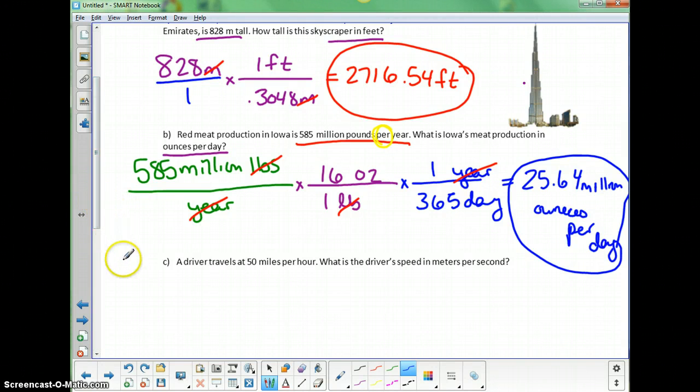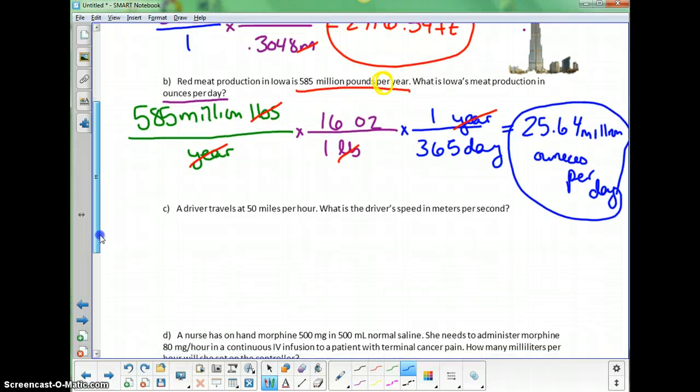Watching where the units are in this problem is very important. Starting off with the fact that it was million pounds per year, I could set it up like this and just make sure per is my division line, and just go through one unit at a time to turn it to the one you want. Let's take a look at another one.